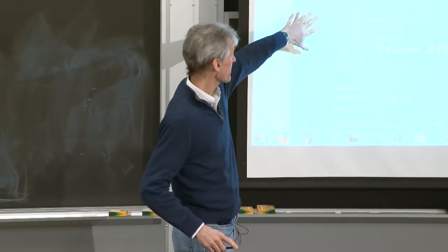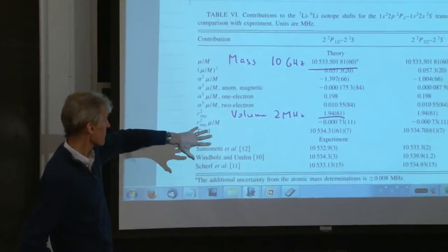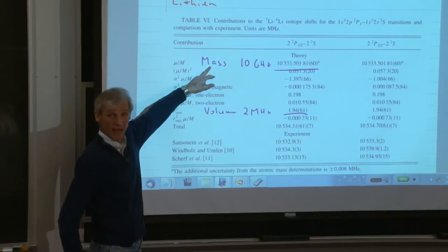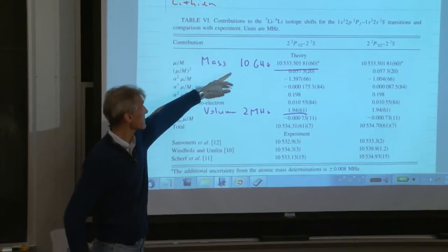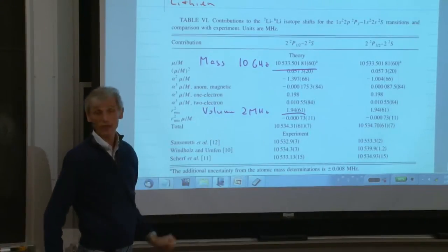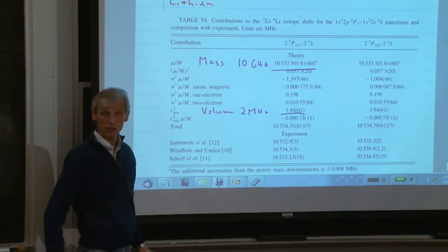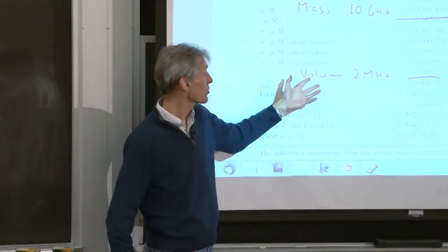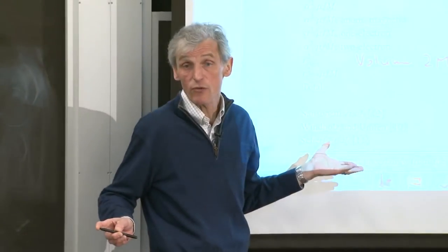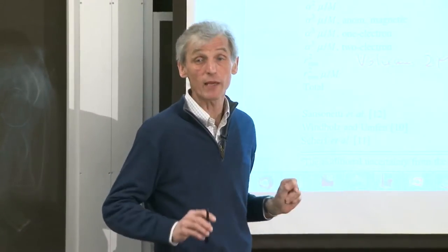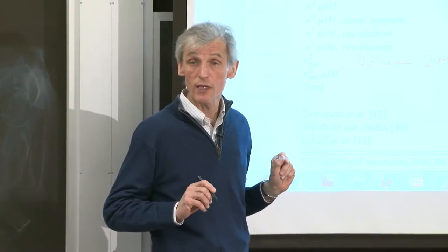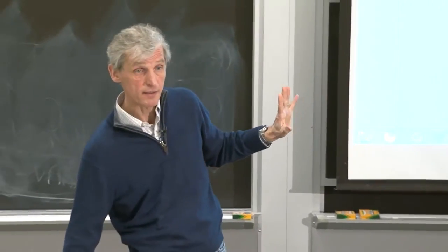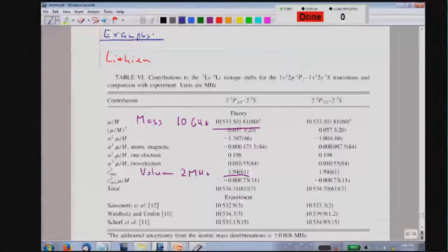This paper shows calculations compared with experiments. The isotope shift between lithium-6 and lithium-7 due to mass is about 10 gigahertz. The volume effect is only 2 megahertz — 1,000 times smaller. However, the precision of experiments is such that if you find an isotope shift, the mass effect can be exactly calculated from the atomic masses. You can still get information about the size of the atomic nucleus out of it.